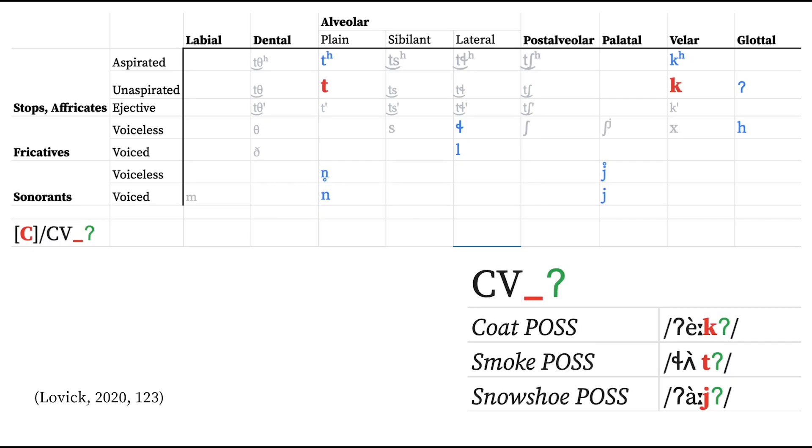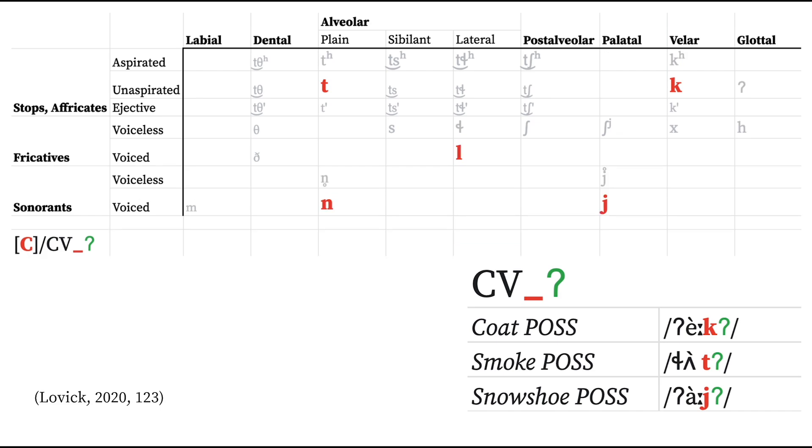Some stems also include a glottal stop, which may only follow unaspirated stops and voiceless approximants and nasals.